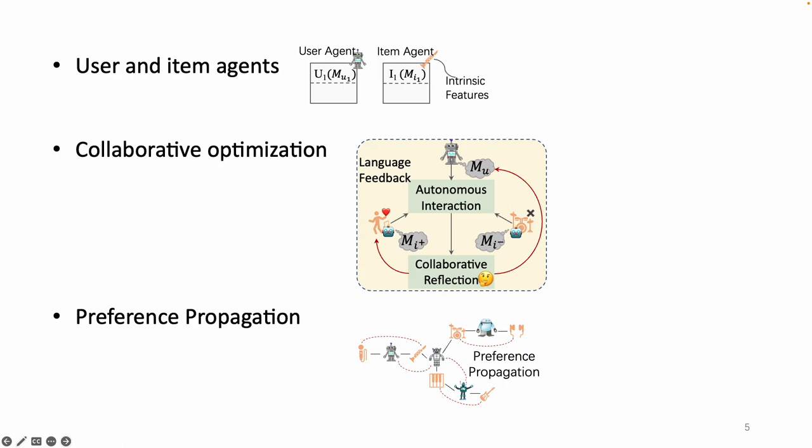At each time step, we prompt user and item-agents to autonomously interact, thereby exploring whether these simulated agents can make consistent decisions with real-world interaction records. Then, based on the feedback obtained from these interactions, we design a collaborative reflection mechanism that enables user-agents and item-agents to reflect on and adjust their memory in a mutual manner. In this way, the simulated preference of user-agents and item-agents mutually aggregate, and can be propagated to other agents in subsequent interactions.